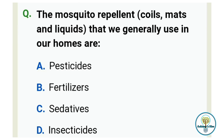Mosquito repellents that we generally use in our homes — like coils, mats, and liquids — these are what? Option A: Pesticides. Option B: Fertilizers. Option C: Sedatives. And option D: Insecticides. So the correct answer for this question is Insecticides.